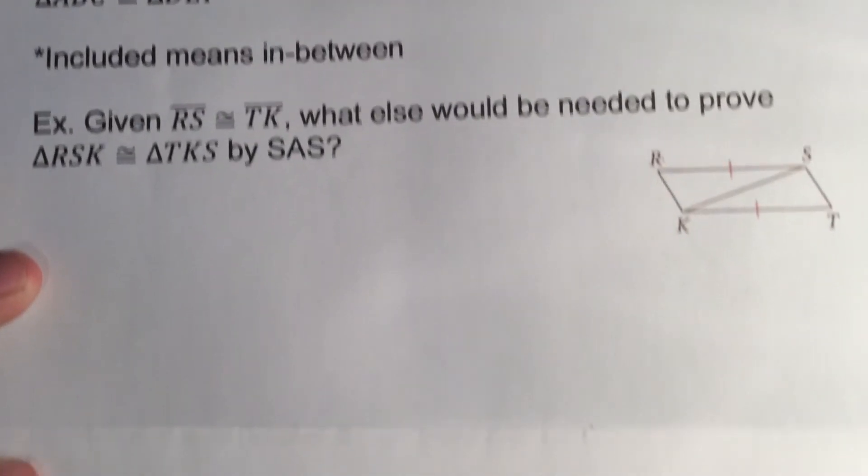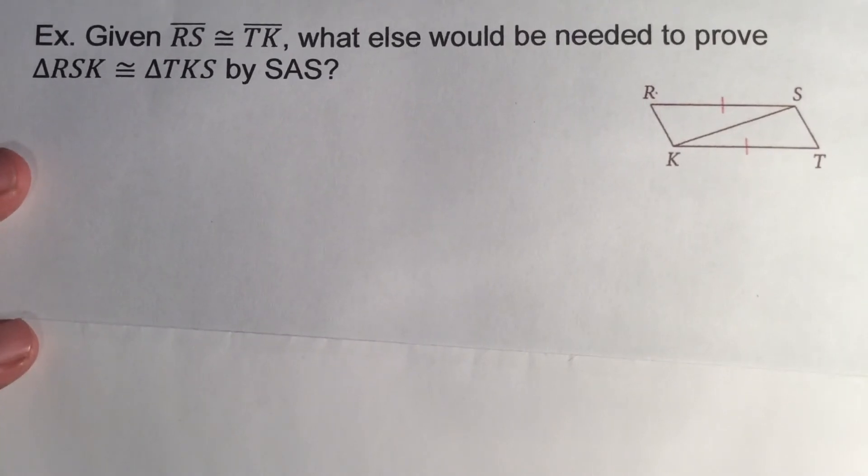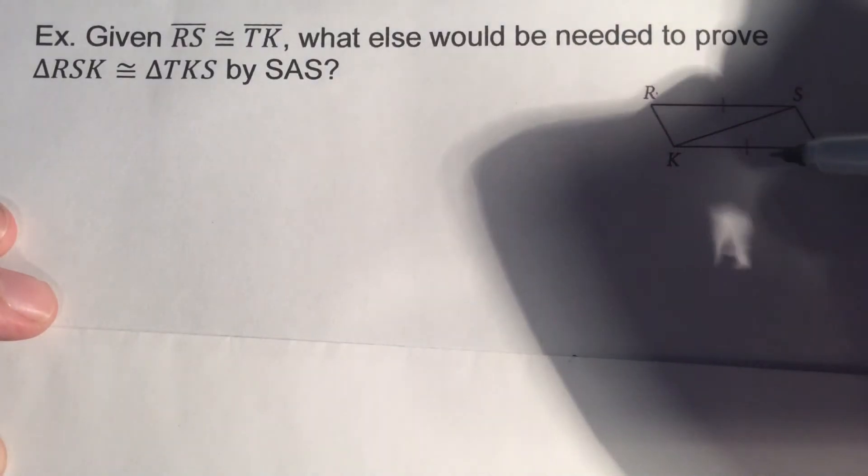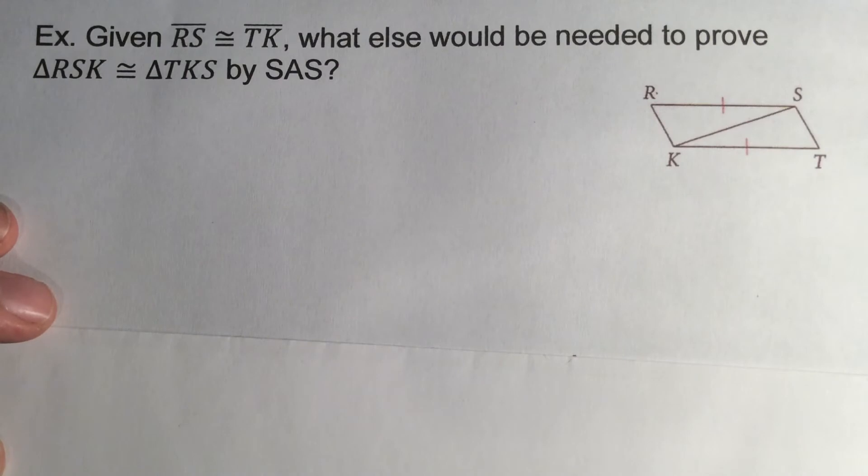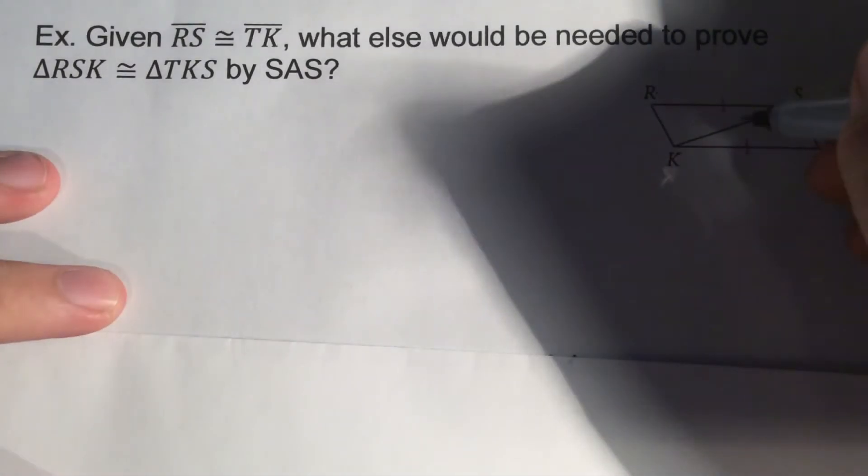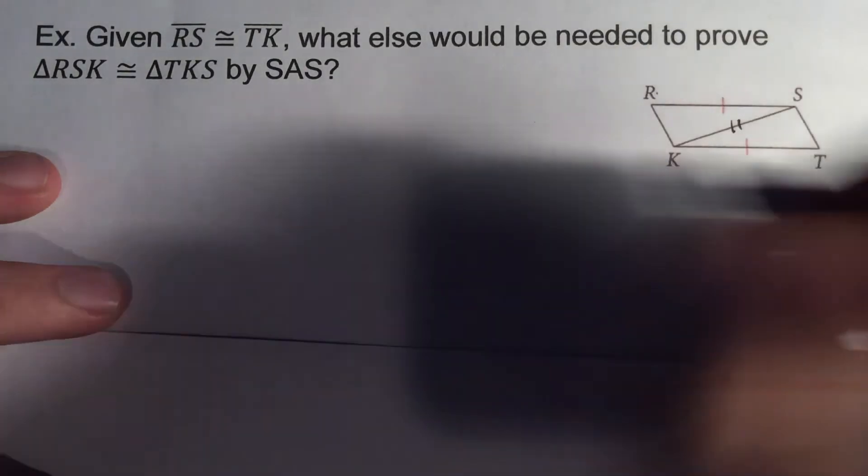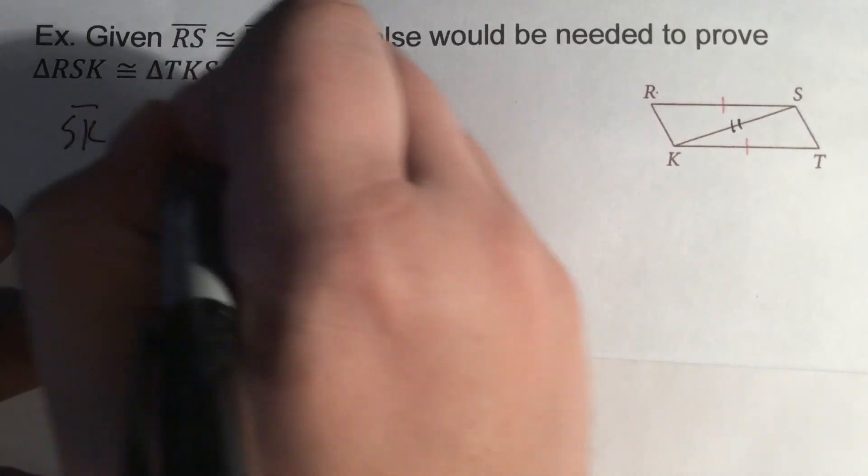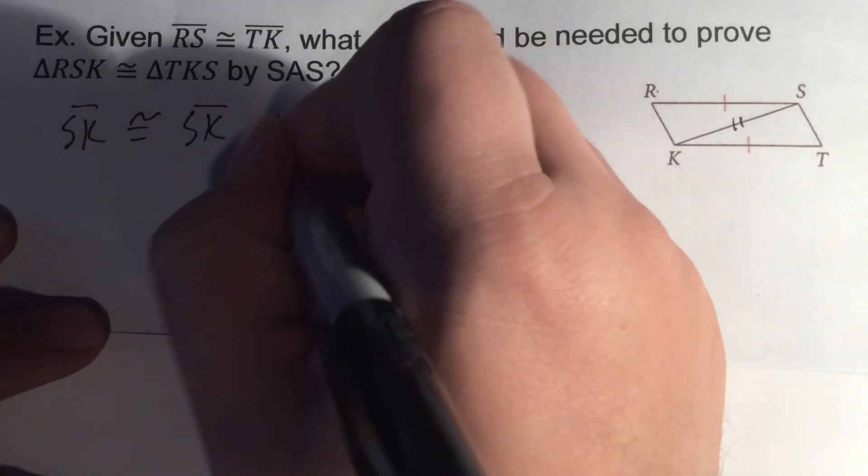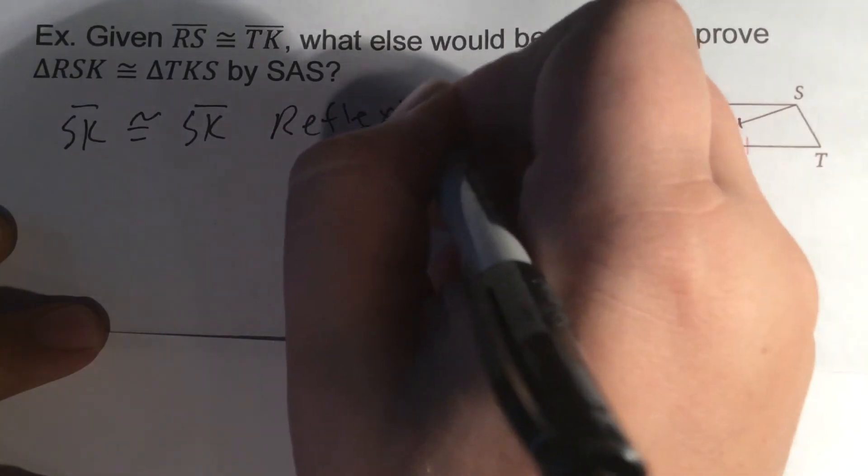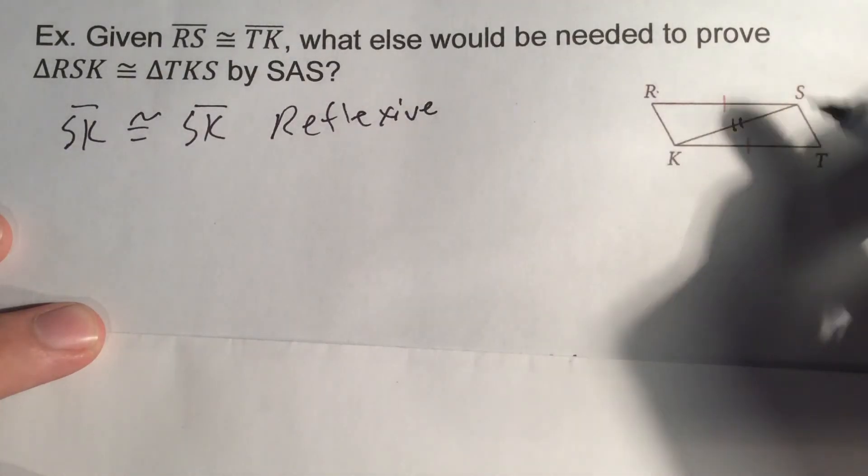If we are given that RS and TK are congruent, what else do we need to know so that we can say that these two triangles are congruent by side-angle-side? We have this top and this bottom that are congruent. So we have a set of sides. We're going to need another set of angles, or a set of angles, and we're going to need another set of sides. So let's look first. Is there an easy set of sides? Well, yeah, there is. Right here in the middle. SK would be congruent to SK by reflexive.